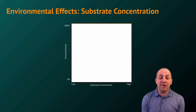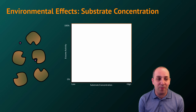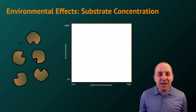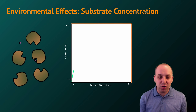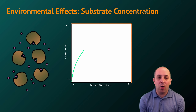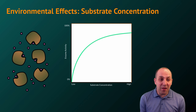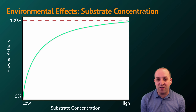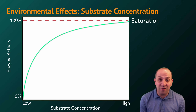A third environmental variable is substrate concentration. Let's visualize five enzymes catalyzing a reaction involving substrate molecules. If we keep enzyme concentration constant and begin to increase substrate concentration, we'll find that initially the rate of enzyme activity increases rapidly. As we continue adding substrate molecules, the rate continues to increase but begins to level off more and more. Eventually, we have more substrate molecules than enzymes available, and the rate of enzyme activity will level off completely — there are no available active sites for additional reactions. This results in a classic saturation point for enzyme activity as a function of increased substrate concentration.